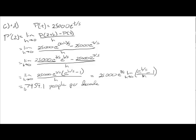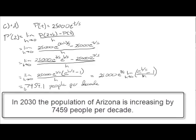So, let's talk about the sentence that goes along with this. We're two decades after 2010. This is our amount. And it's positive, so we can say it's increasing. In 2030, the population of Arizona is increasing by 7459 people per decade.